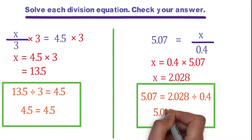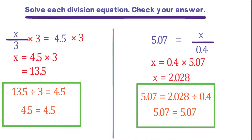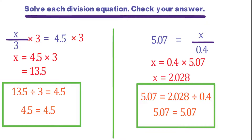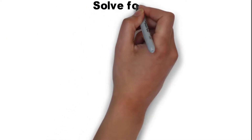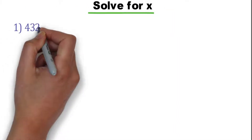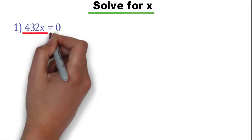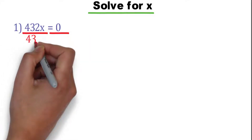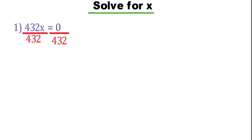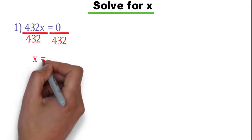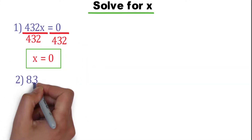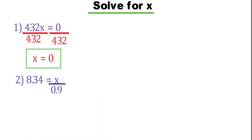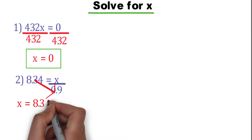Now 5.07 equals 5.07 — the two sides are the same. Let's have more examples. Solve for x. Number 1: 432x equals 0. Divide both sides by the coefficient of x, which is 432. We get x equals 0. Number 2: 8.34 equals x over 0.9. To find the value of x, just multiply 0.9 by 8.34.